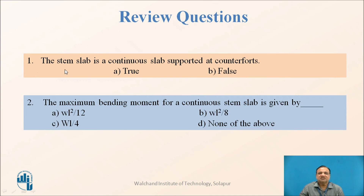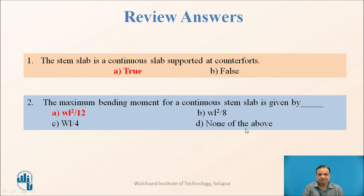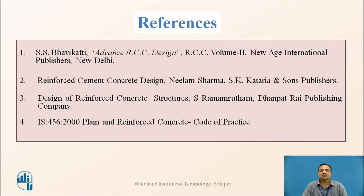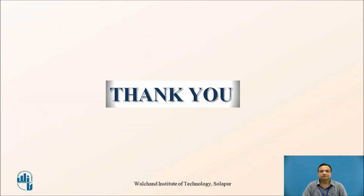Review question 1: The stem slab is a continuous slab supported at the counterforts — True or False? Review question 2: The maximum bending moment for a continuous stem slab is given by WL²/12, WL²/8, WL/4, or none of these? Answers: The stem slab is a continuous slab supported at the counterforts — True. The maximum bending moment is WL²/12. These are the references used for this presentation. Thank you.